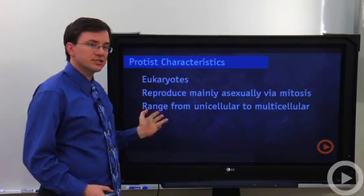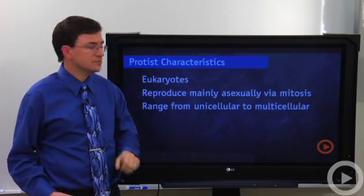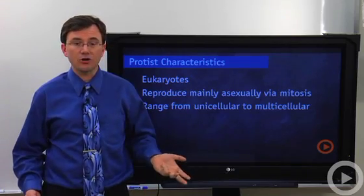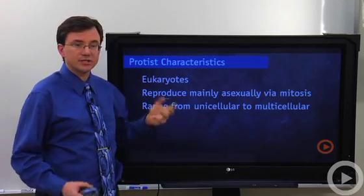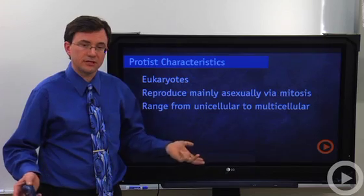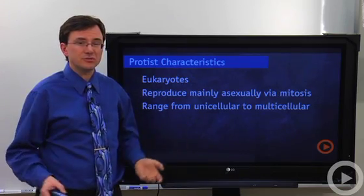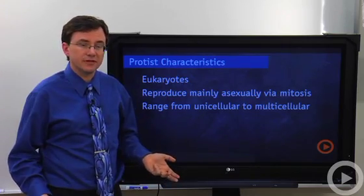They range in size from unicellular, individual single-celled organisms to multicellular. Things like kelp are lumped together originally into the Protist kingdom, and they're huge. They can be over 150 feet long.